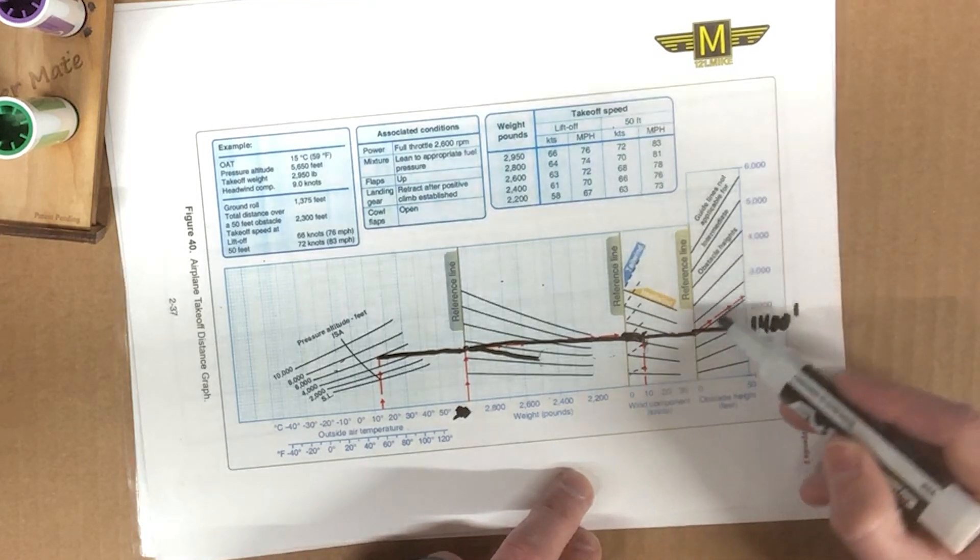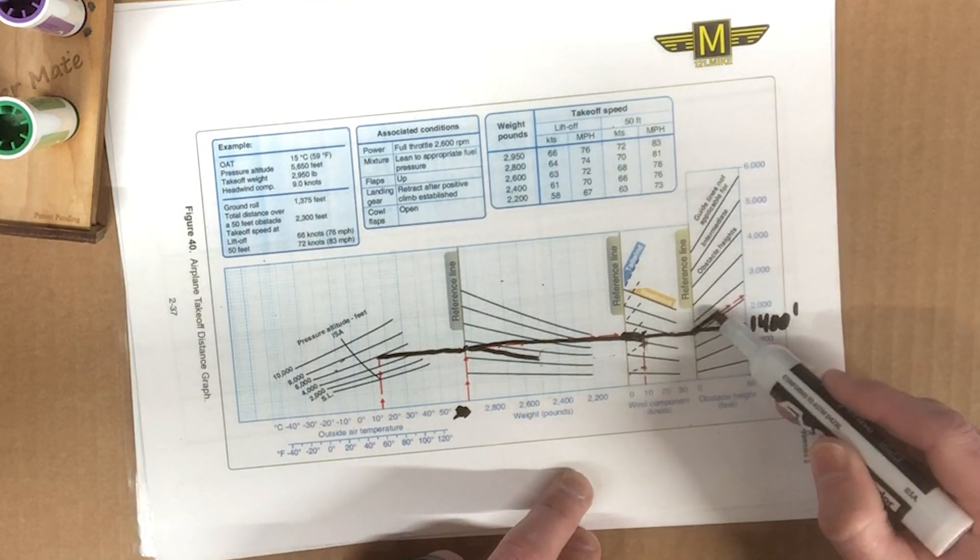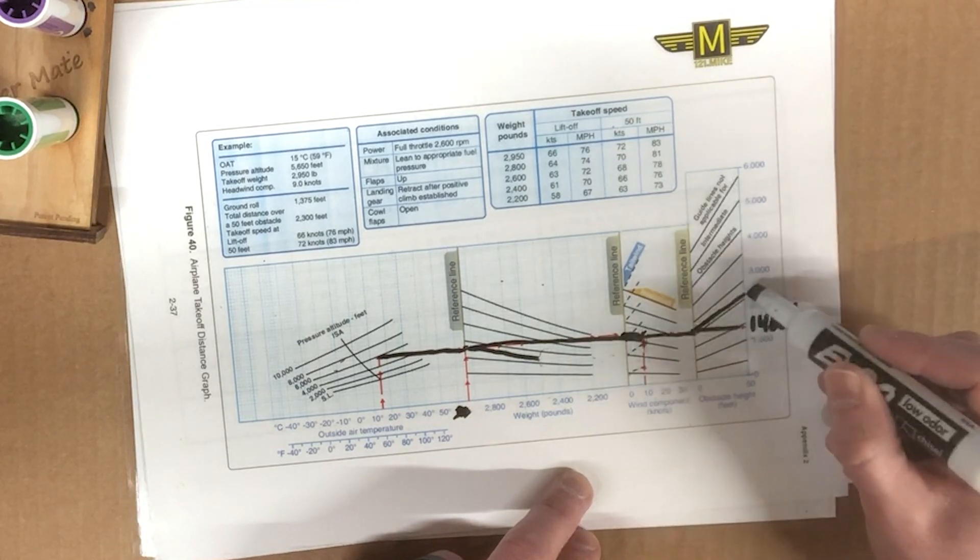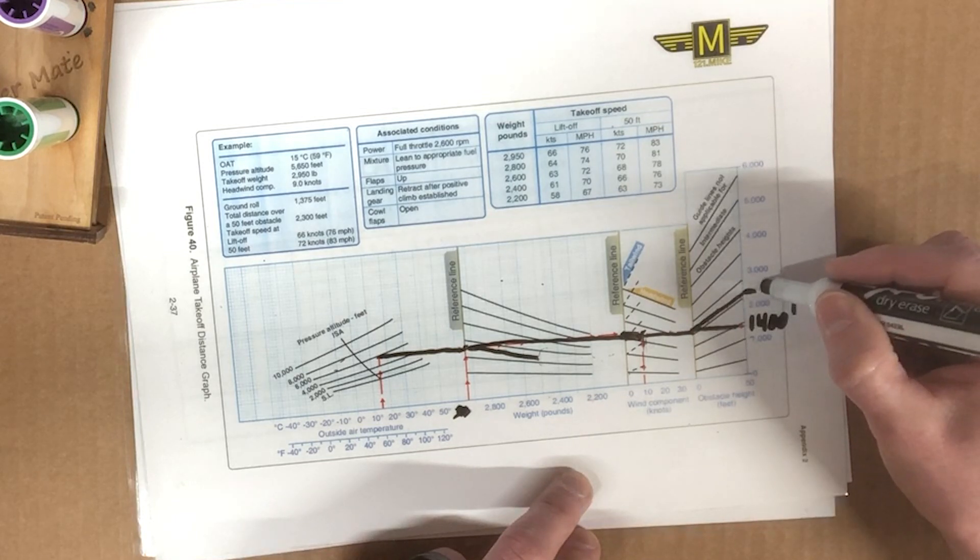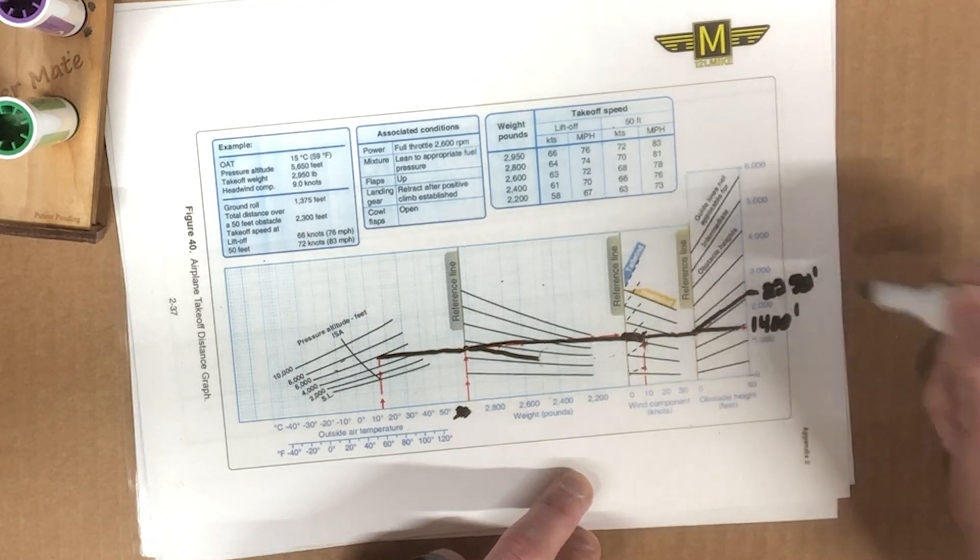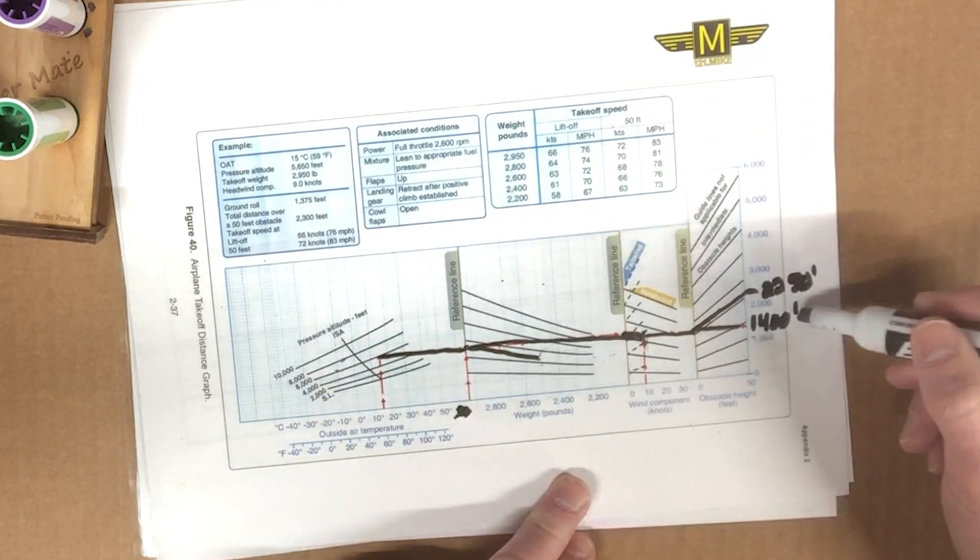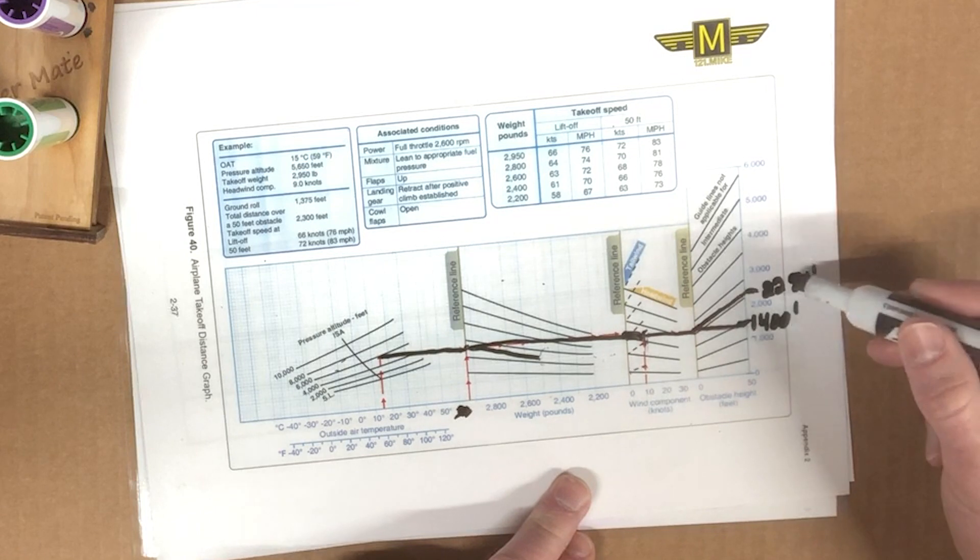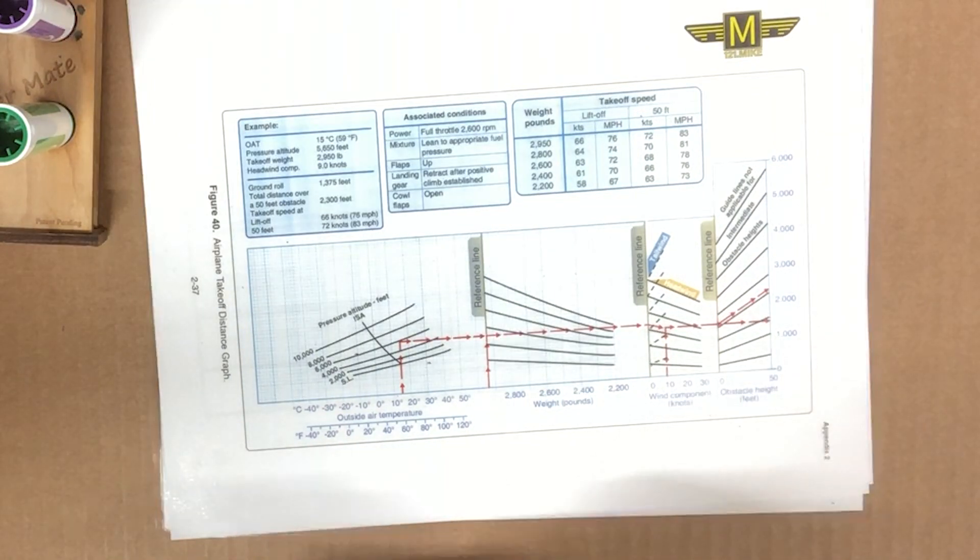To get our height over the 50-foot obstacle, we will fly parallel to these black lines where we came in and that takes us along these red arrows here in our example and pops us out right there, which looks to be about, oh, 2,250 maybe. And the answer is at 2,300. So that's good. So there's our answer for our ground roll and our clearance over a 50-foot obstacle. You can see it did all the math for me. I didn't have to do any math. It's all graphical. I'll make one up really quick and we'll do it again before I have you do one on your own.